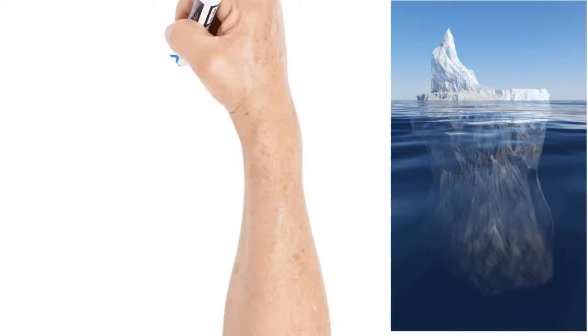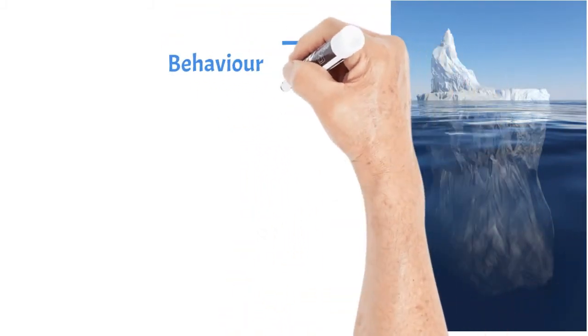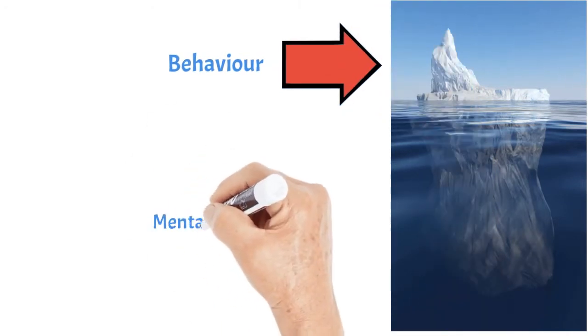Think of an iceberg. Above the waterline is your behavior that is visible to everyone. Below the waterline are your mental models,